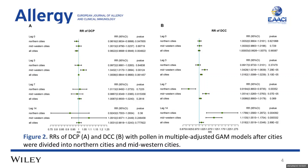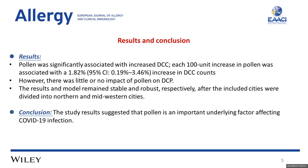The results and the model remained stable and robust after the included cities were divided into northern and middle western cities. The study suggests that pollen was an important underlying factor affecting COVID-19 infection. Thank you.